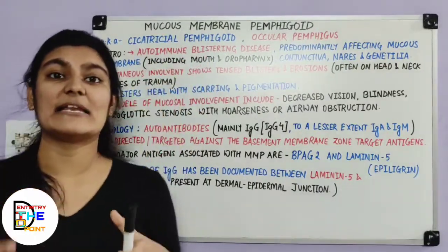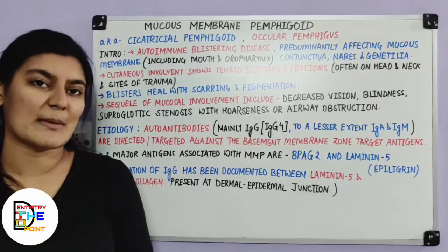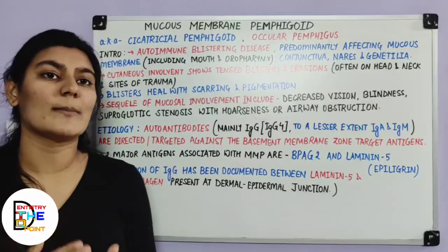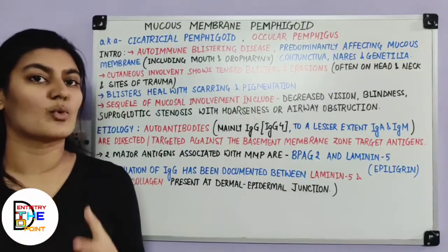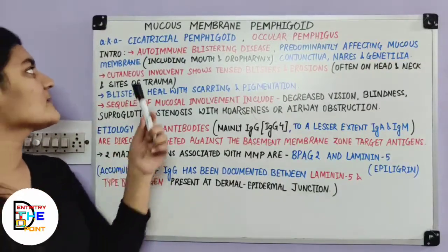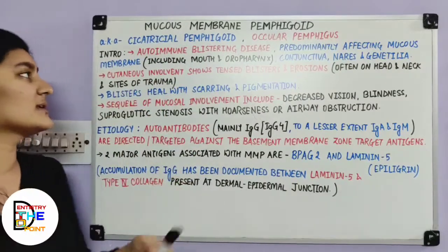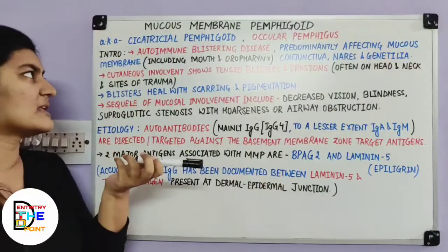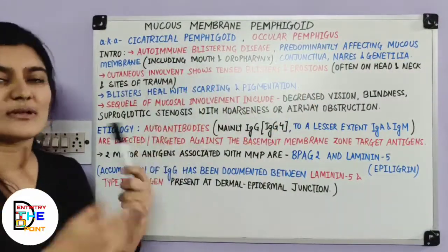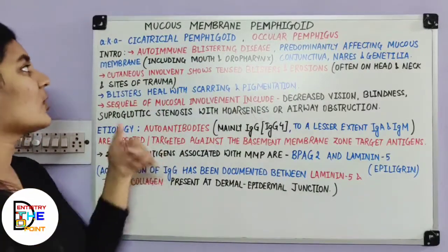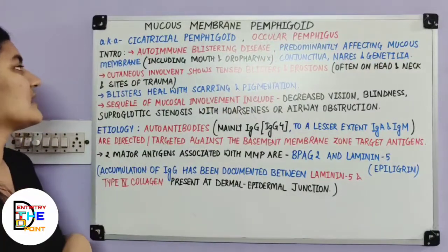Mucous membrane pemphigoid, as the name itself suggests, affects the mucous membranes — we will see which ones are involved. Most dominantly it affects the mucous membranes, that's why it is known as mucous membrane pemphigoid. The other names are cicatricial pemphigoid and ocular pemphigus. You will get to know later in the video why it is called cicatricial or ocular pemphigus.